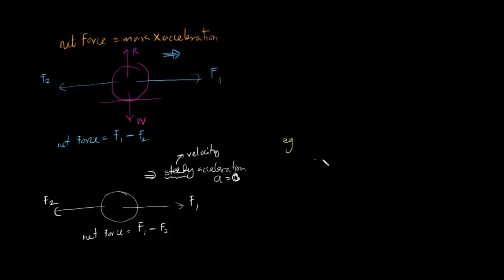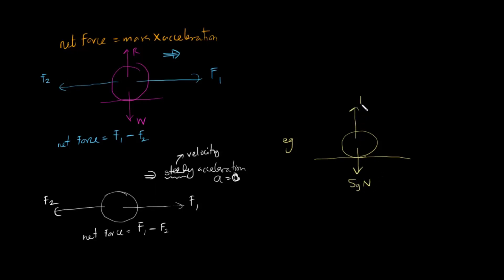Suppose we know that an object has a mass of 5 kg. So basically the weight 5G Newton and the reaction force would cancel each other out. So basically it would be R equals to 5G.